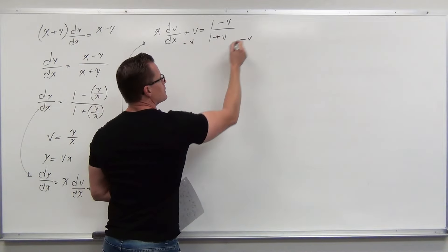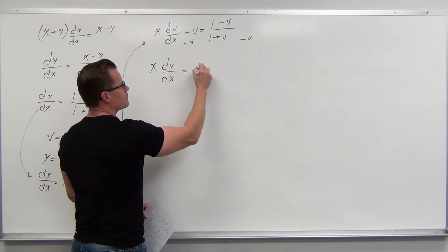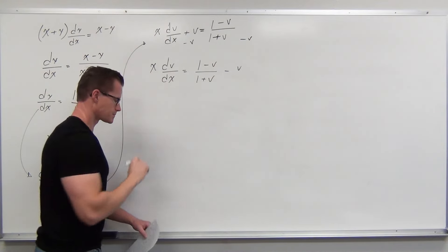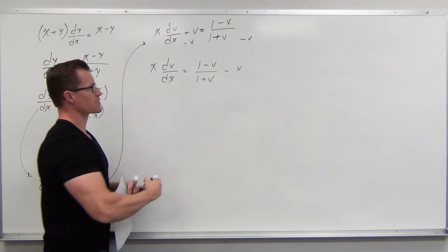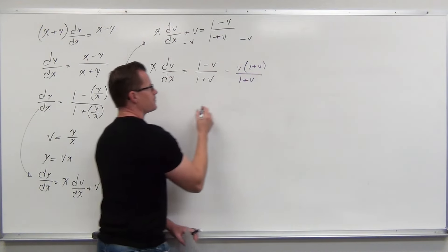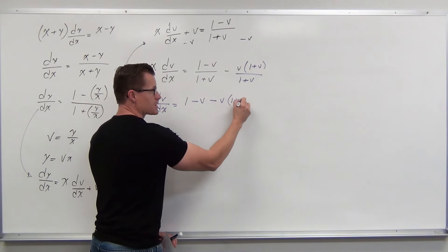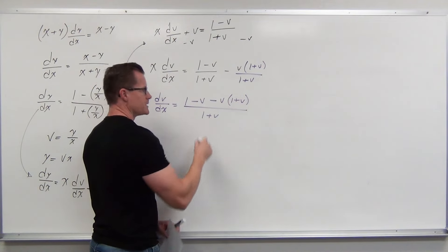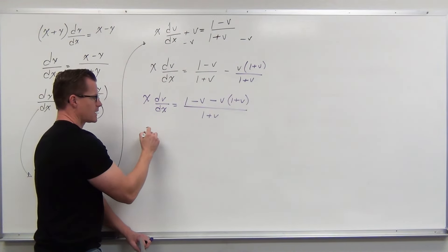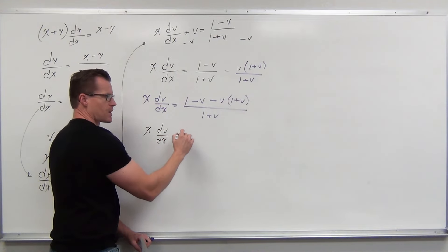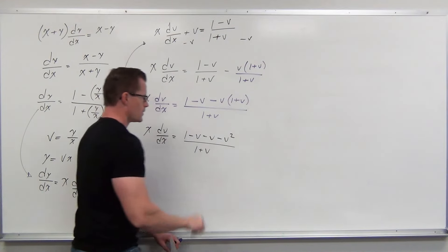We want all the v's together for a separable equation. So we subtract v from both sides and get a common denominator. Our LCD here is 1 plus v. After combining, the numerator becomes 1 minus v minus v(1 plus v), all over (1 plus v). Distributing carefully — I never want to do this in my head because it's easy to mess up the sign — we get x(dv/dx) equals 1 minus v minus v minus v squared, all over 1 plus v.